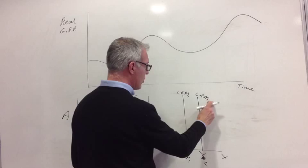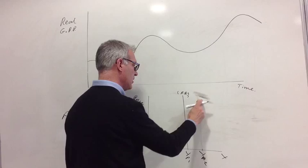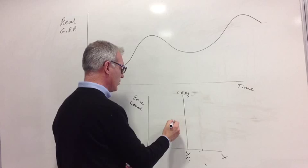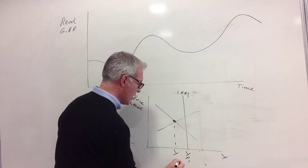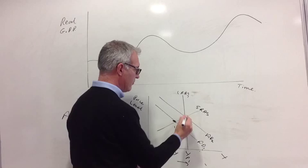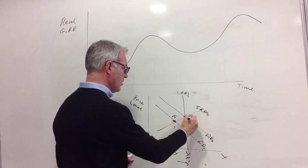And similarly, on the long-run aggregate supply curve, we'll just get rid of this one here. Again, if we're producing below our potential output, say at this point here, then if the economy shifts from Y1 back to the potential output, say because of an increase in aggregate demand from AD1 to AD2 and a short-run aggregate supply, then that is a recovery in the economy, shifting from point A to point B.